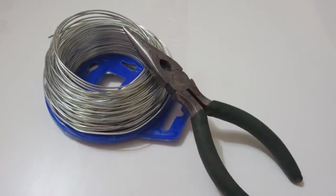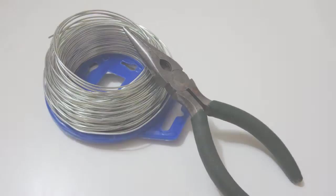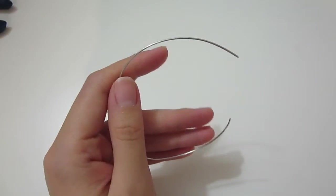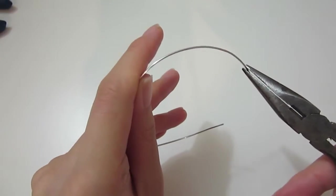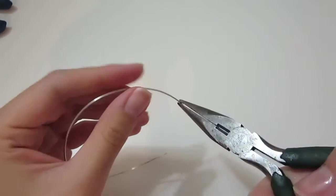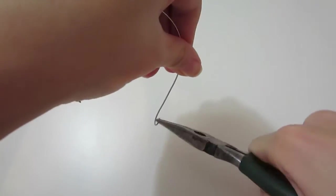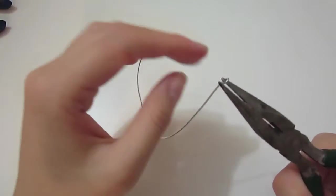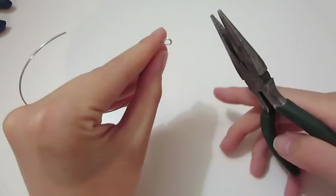All you will need are some wires in the color of your choice and a long nose plier. To start, hold one edge of the wire using the plier and wrap the wire around it to form a small circle which will be the cup holder.